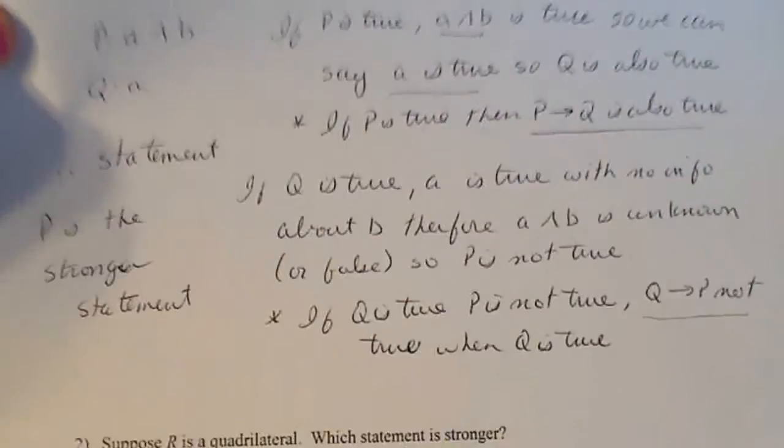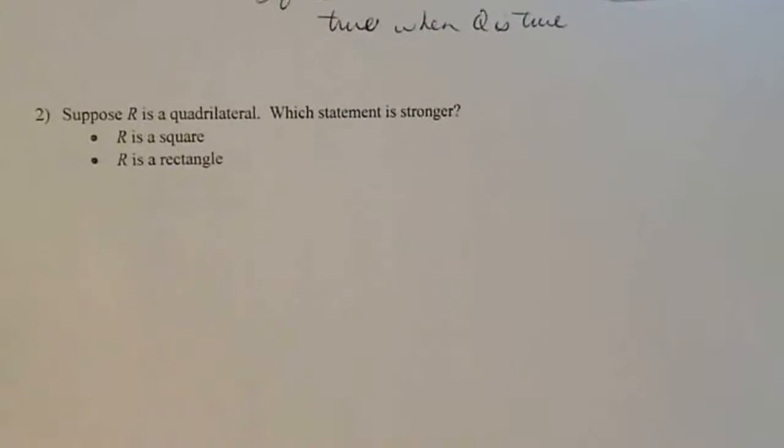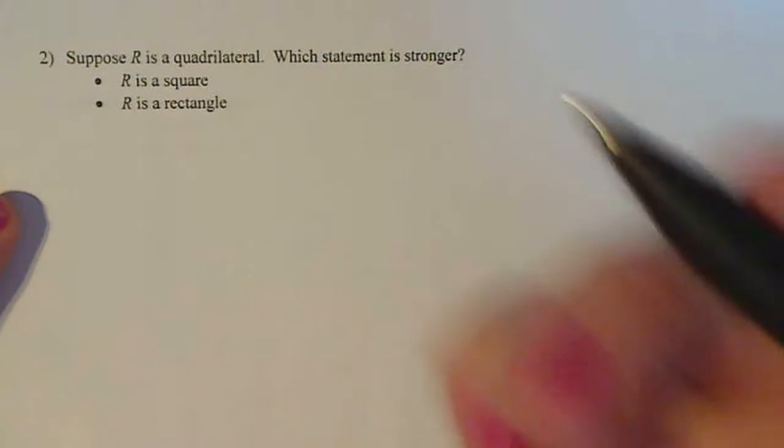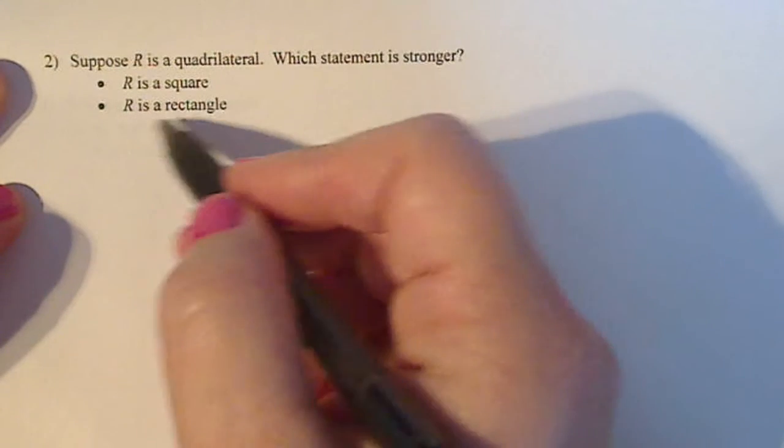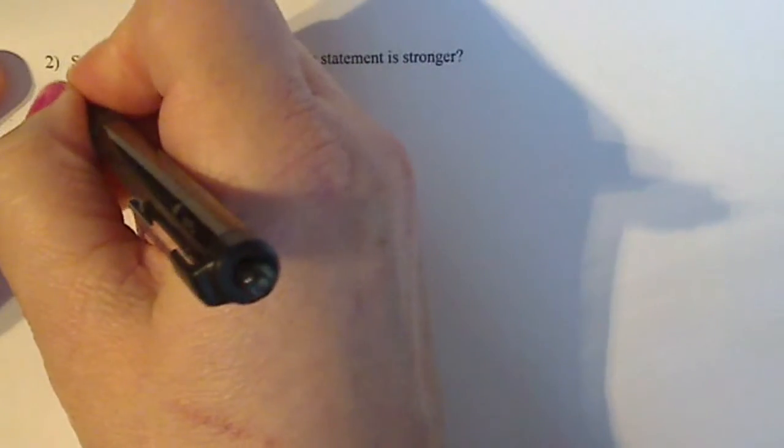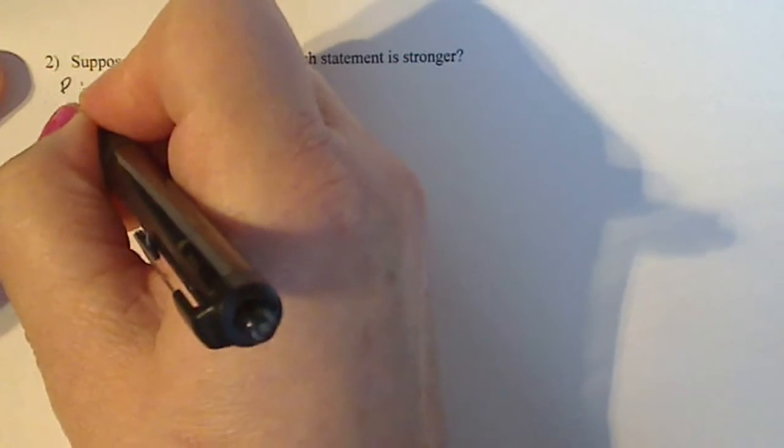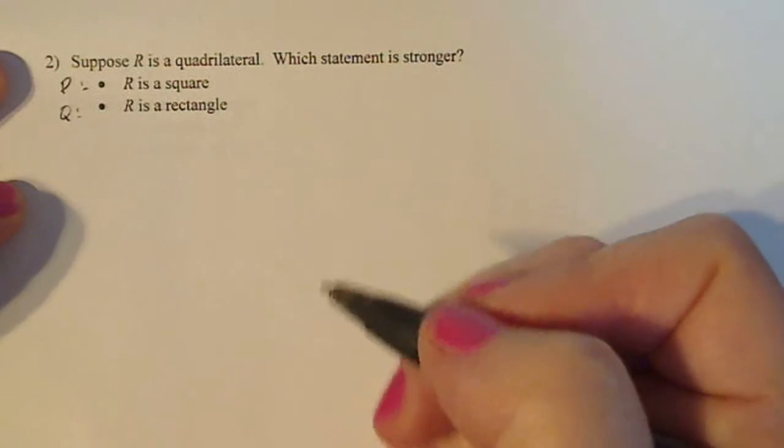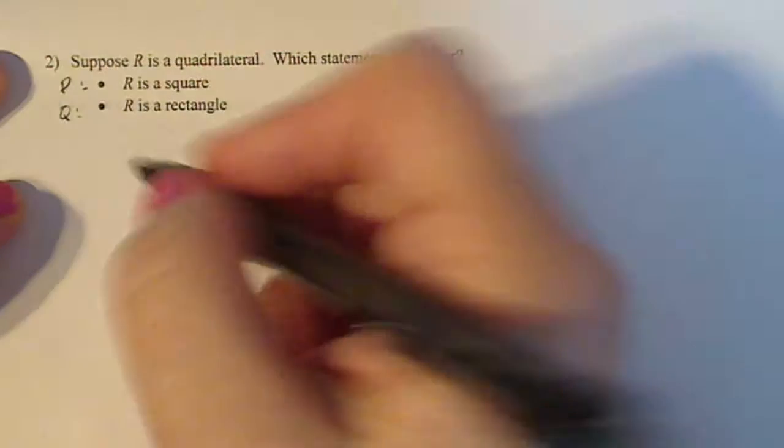All right. Now let's do some like more real world problems. So I have here, I have a quadrilateral and I want to know which one of these statements is stronger. R is a square, R is a rectangle. So I'm going to let P be the top statement, R is a square and Q be the bottom statement, R is a rectangle. And I'm going to go through the same structure, same logic.